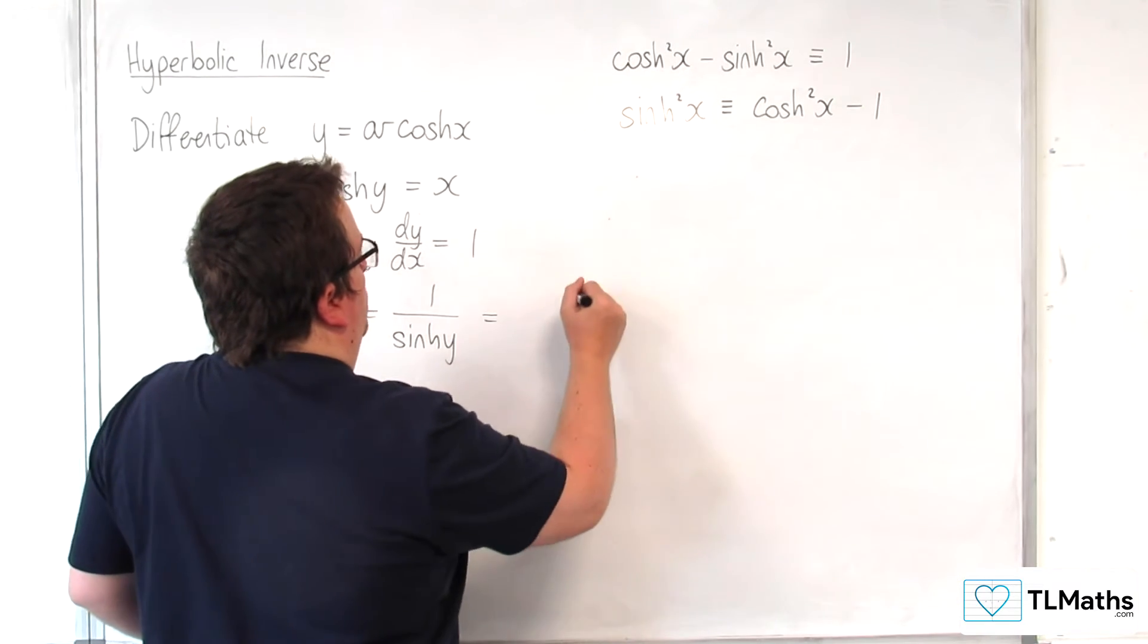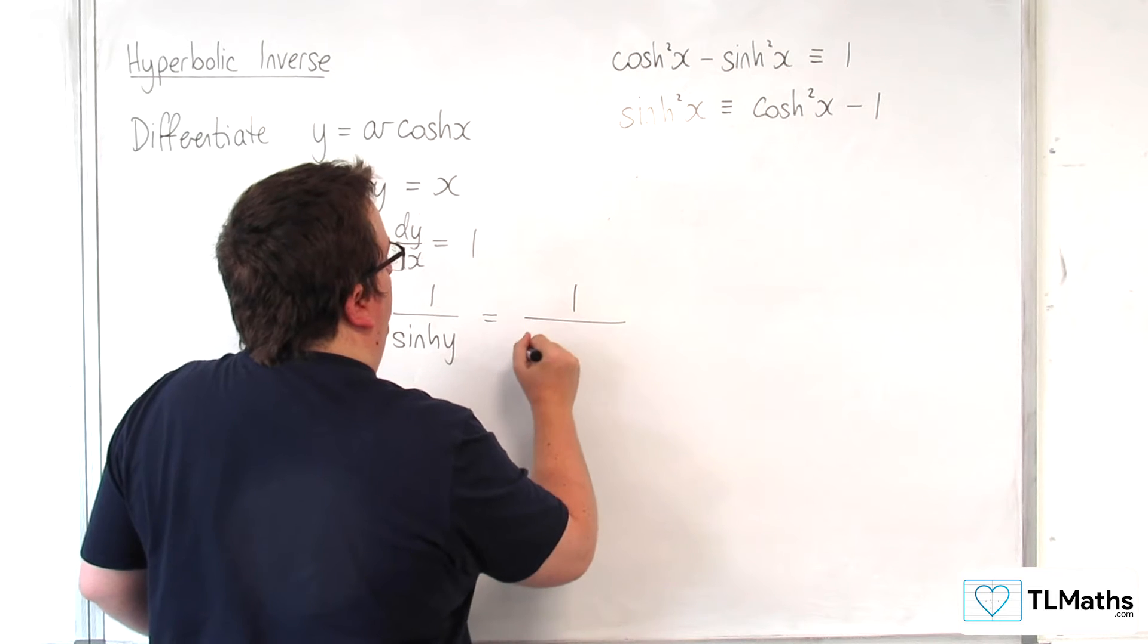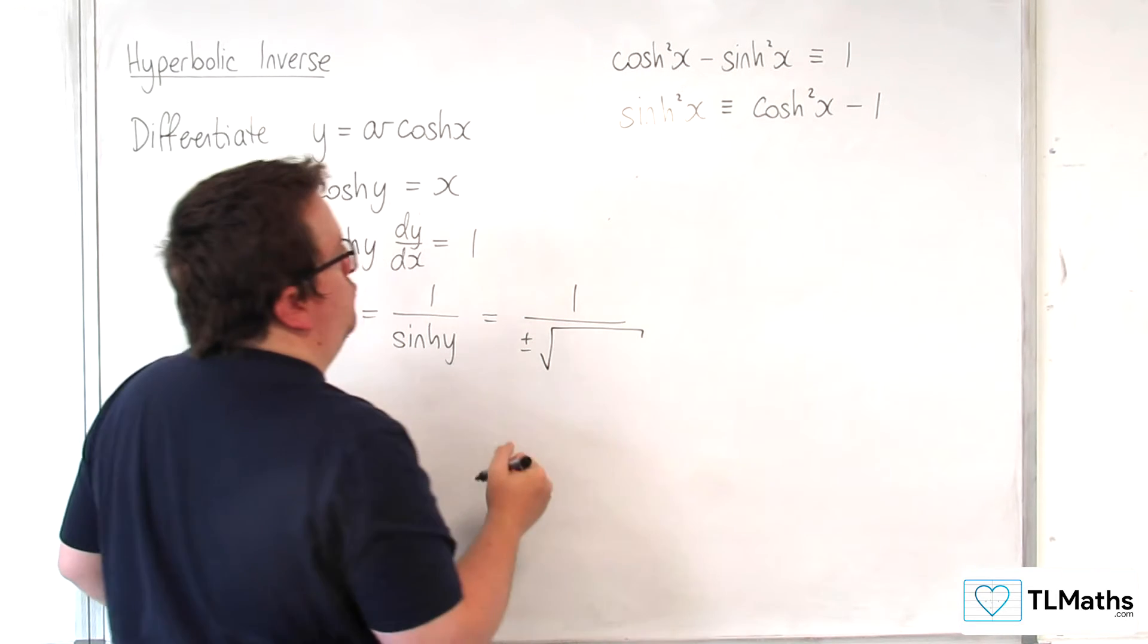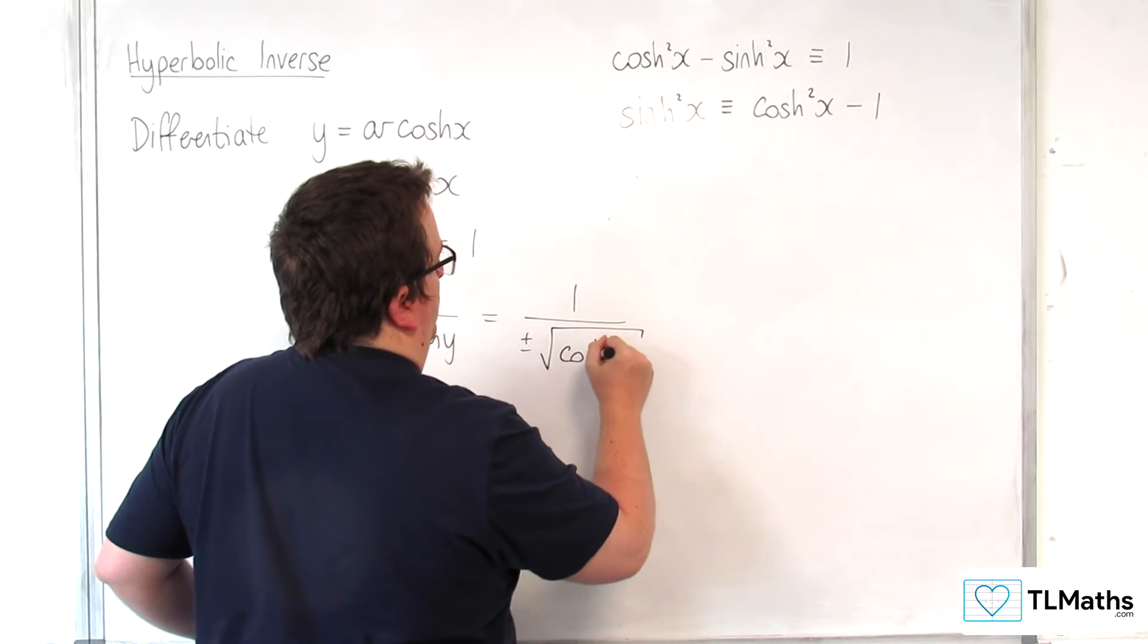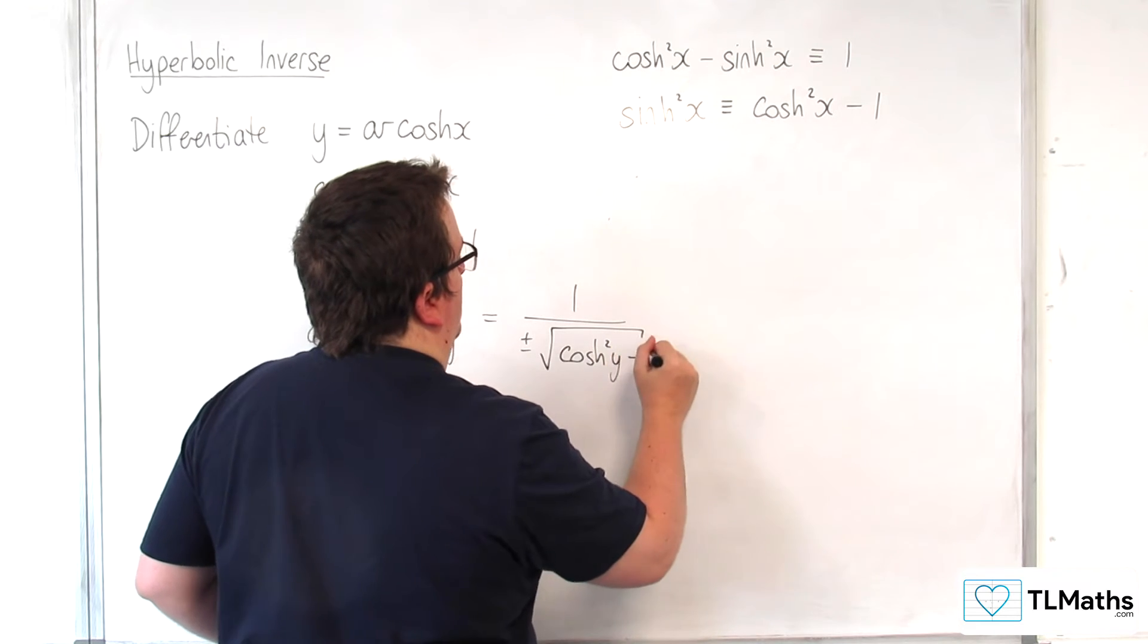So this will be equal to 1 over plus or minus the square root of cosh squared y minus 1.